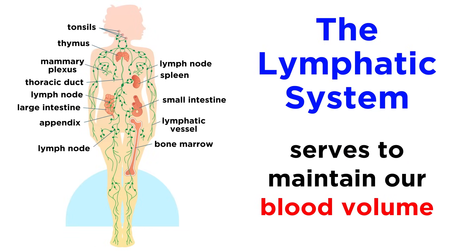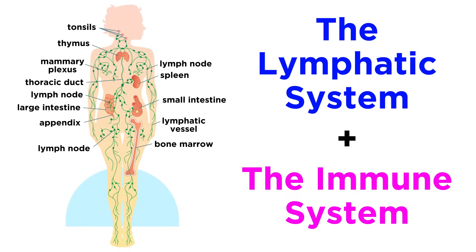So that's what we need to know about the lymphatic system, which serves to maintain blood volume but also works closely with the immune system. The immune system is absolutely essential to our ability to stay healthy, so let's move forward and learn about that next.